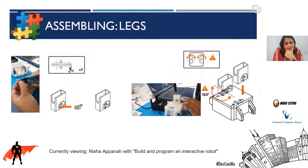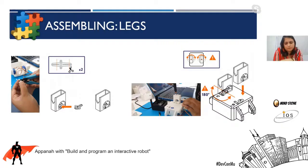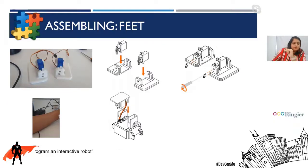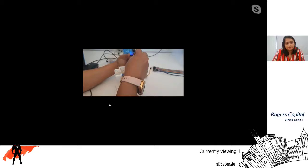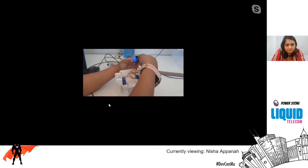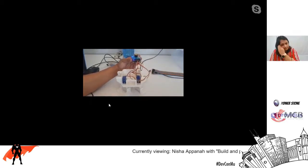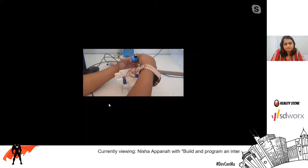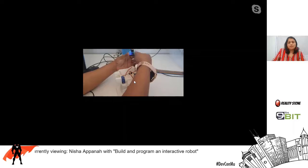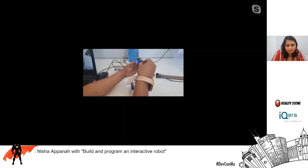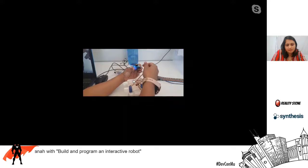Then you attach the legs to the body. Moving on to the feet — I'll play a little video so you can see the building process. Here we're just testing the servo motors that we assembled for the body, feet, and legs.